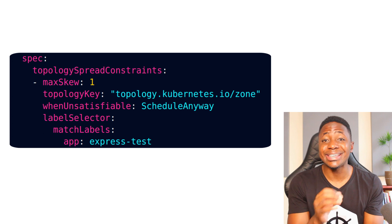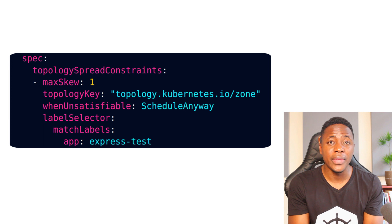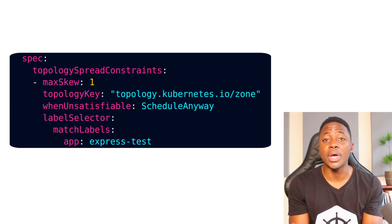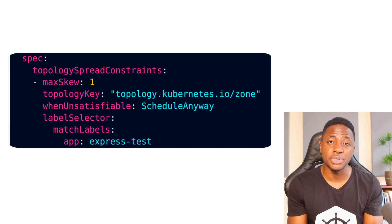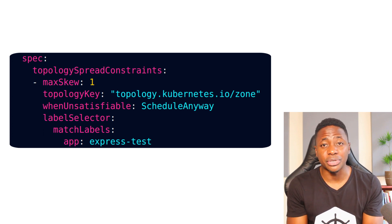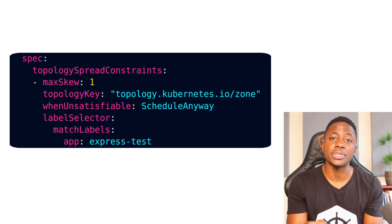The Topology Key is a key for one of the node labels and defines the type of topology domain like a zone, and is paired with an appropriate value — for example, a value could be an AZ like EU West 1A. When Unsatisfiable is used to determine how you want the scheduler to respond if the desired constraints can't be satisfied. And the Label Selector is used to find matching pods so that the scheduler can be aware of them when deciding where to place pods in accordance with the constraints you've specified. There are other fields, and I've put a link to the docs in the description below.